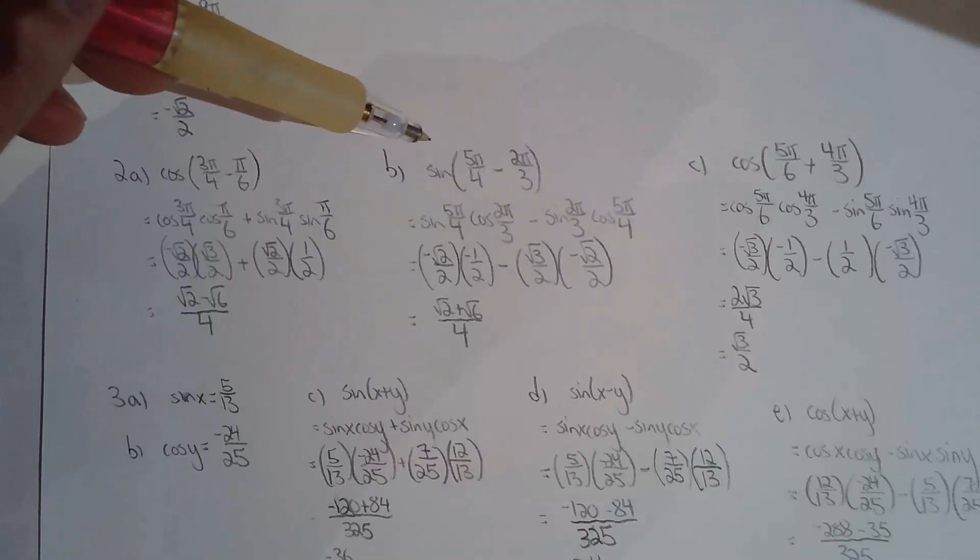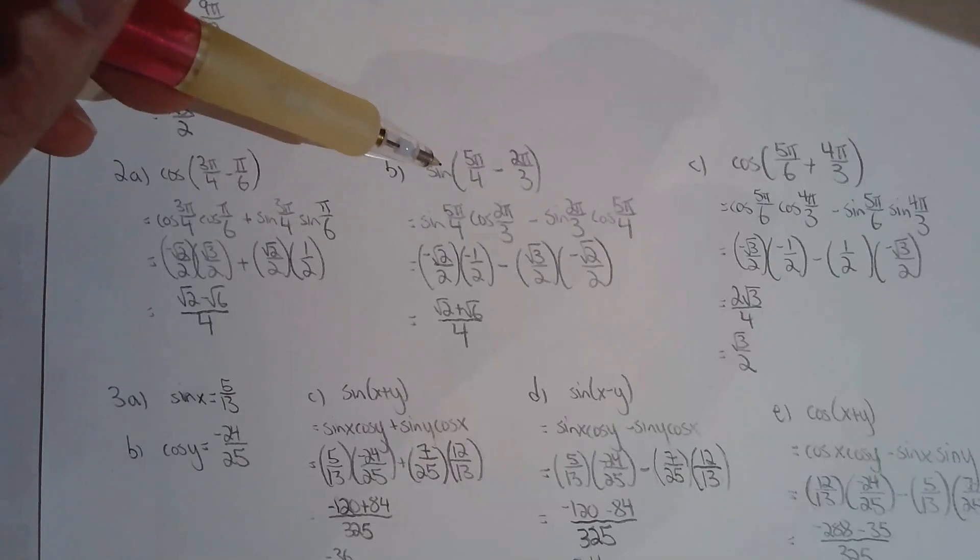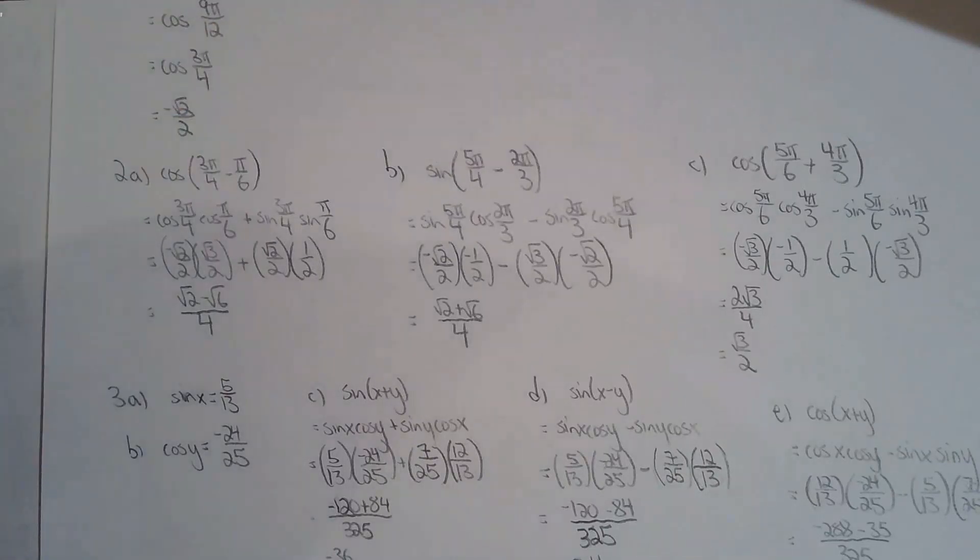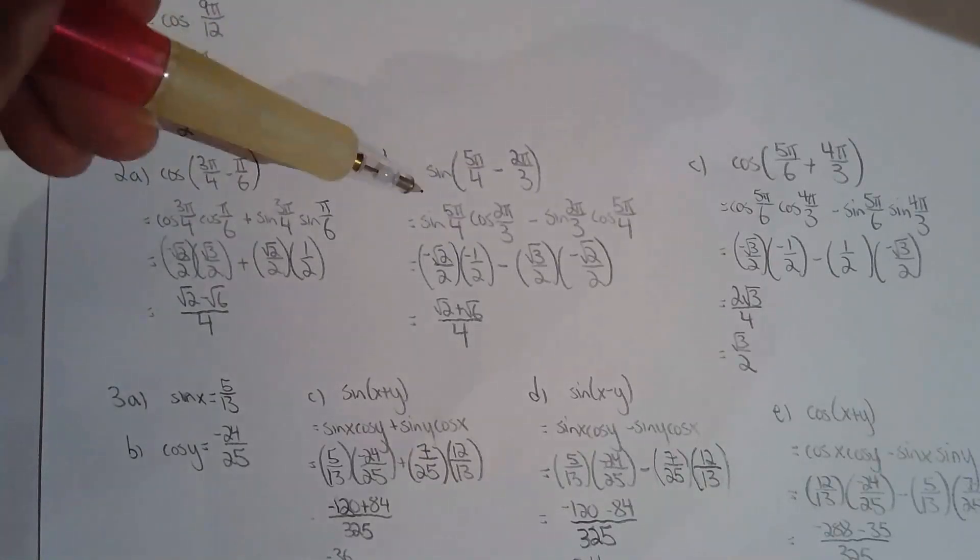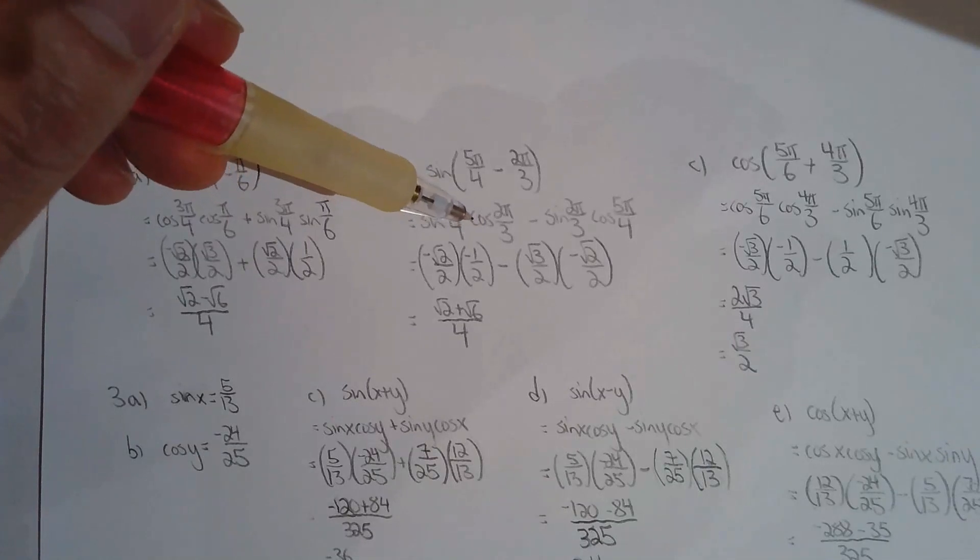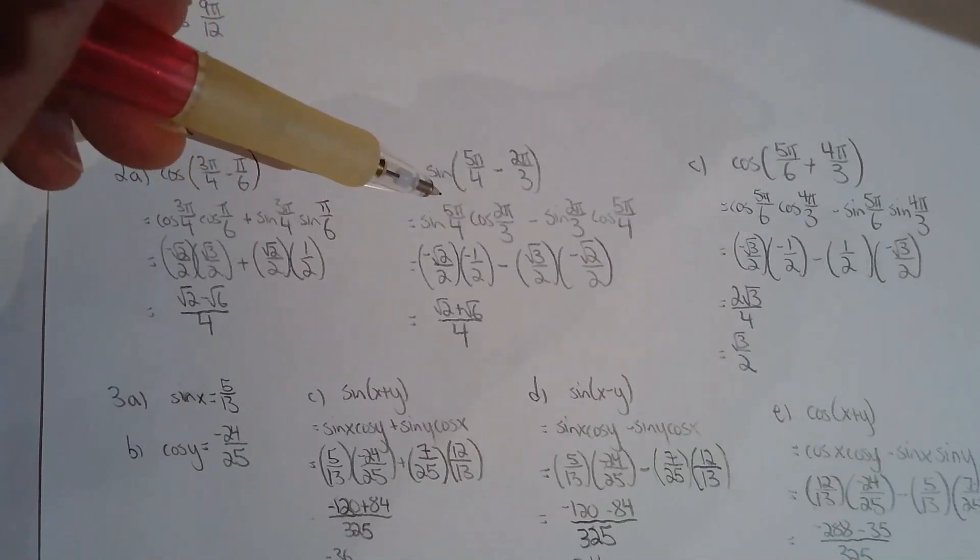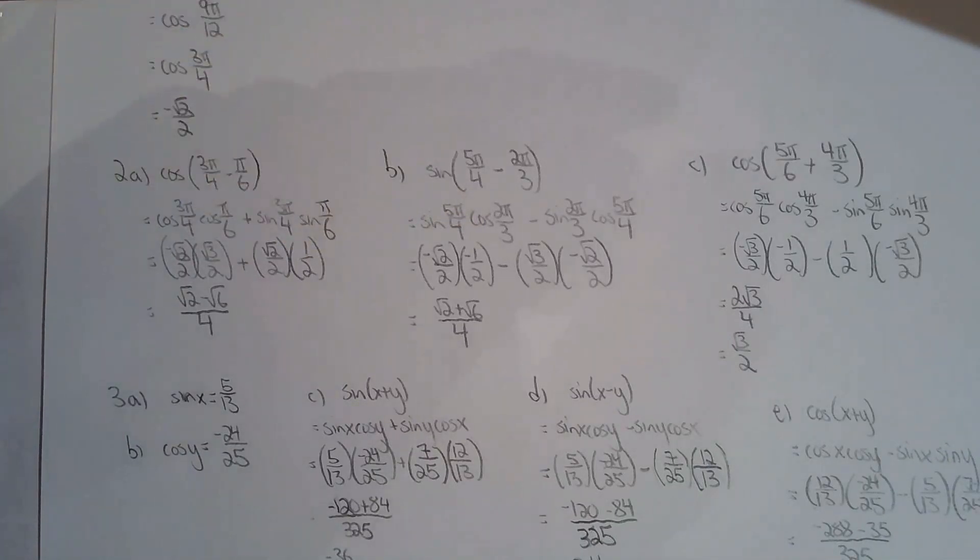Same thing can be said for b, but for 2b, you have to use the subtraction formula for sine instead of subtraction formula for cosine. Four ratios. Watch the signs. Be careful. And then just evaluate.